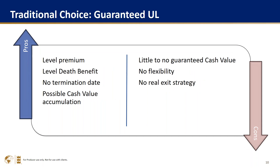GUL — you have a level premium and a level death benefit, no termination date, it keeps going as long as you keep paying the premium. There is possible cash accumulation, but no guaranteed cash accumulation, and even when it exists you can't really use it without jeopardizing your death benefit. There's no real flexibility with GUL and no real exit strategy. With many of these policies you get half your premiums back at year 15, and a full return of premium around year 23–25, but it has to be on their schedule. Life doesn't happen on a schedule — what if they need those funds at year 14 or year two or three? GUL is a great product for what it is, but that's a blend of whole life and term.